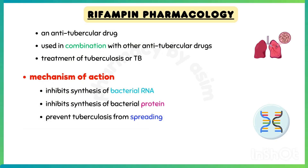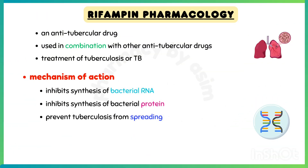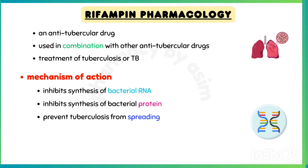Rifampin is an anti-TB drug, primarily used in combination with other antitubercular drugs to treat tuberculosis or TB. Rifampin inhibits synthesis of bacterial RNA and protein synthesis, thus preventing tuberculosis from spreading throughout the body.